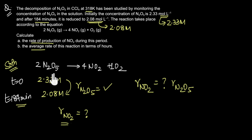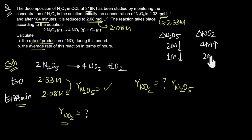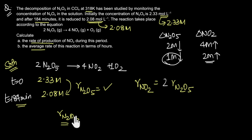Looking at this equation, 2 molar of N2O5 on complete reaction gives rise to 4 molar of NO2. So if the concentration of N2O5 decreases by 2 molar, the concentration of NO2 increases by 4 molar in the same interval. Therefore, if [N2O5] decreases by 1 molar, [NO2] increases by 2 molar. So the rate of formation of NO2 will always be 2 times the rate of disappearance of N2O5.